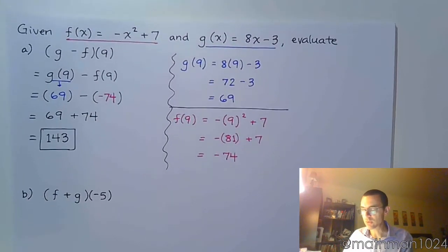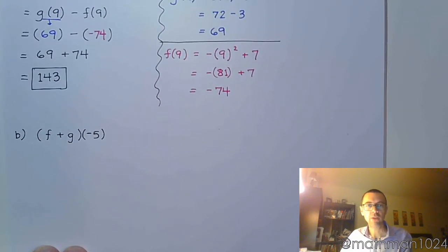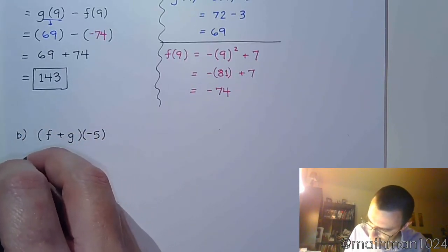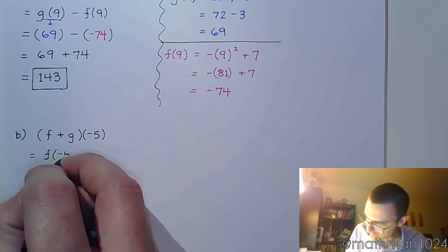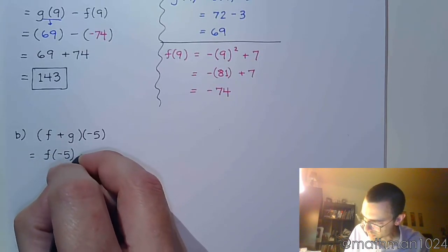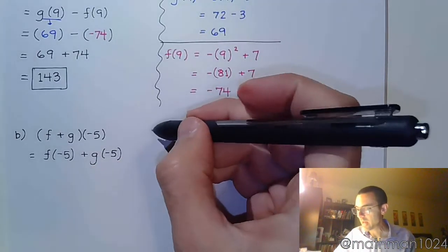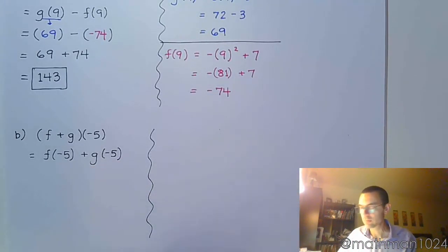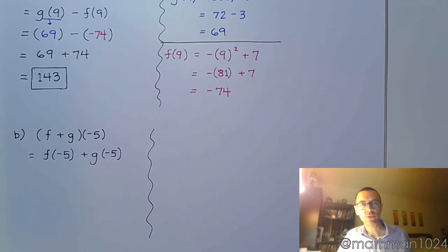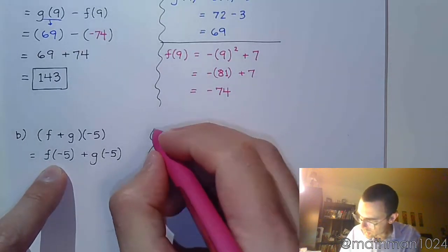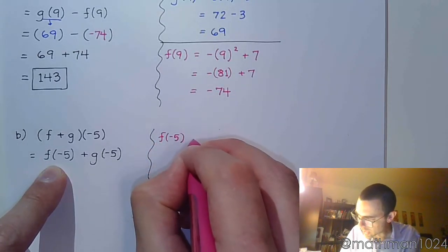Let's go to this next one. f plus g of negative 5. So this means you're going to find f of negative 5, you're going to find g of negative 5, and then you're going to add those results. That's it. So it's pretty simple to find each of these evaluations on their own, off to the side. So you do that, and then you bring them back together and add them.